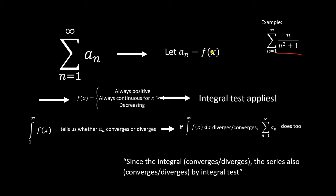However, note that if the integral converges to a number, that does not mean that the series converges to the same number. The integral test does not tell us what the series will converge to. For example, if the integral came out to be π/3, then the series does not necessarily converge to π/3 — it just converges to something.